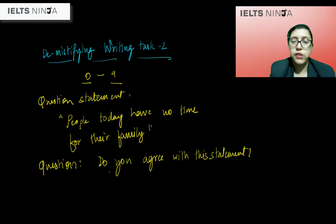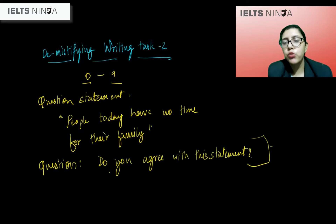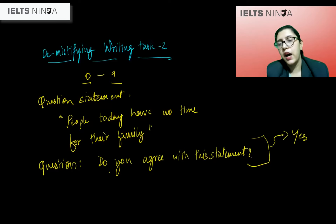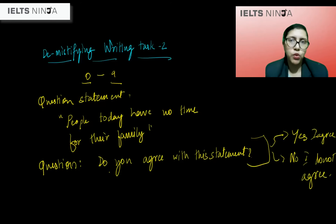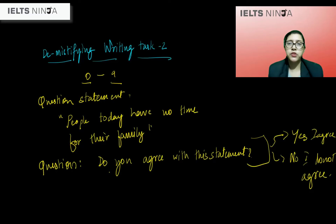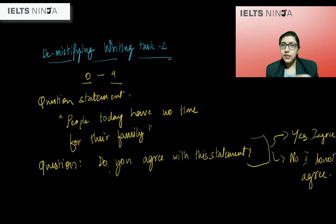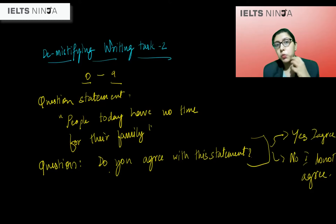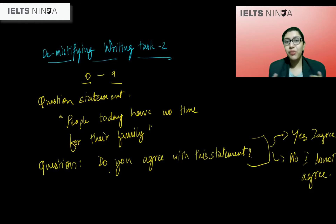When someone asks you whether you agree with the statement, you have two clear-cut answers: yes I agree, or no I do not agree. Irrespective of what your answer is, what is expected is that you are able to substantiate your answers with adequate reasoning and explanatory points. This becomes one of the parameters on which you are judged, so you will have to think about the various aspects from which you can approach the topic.